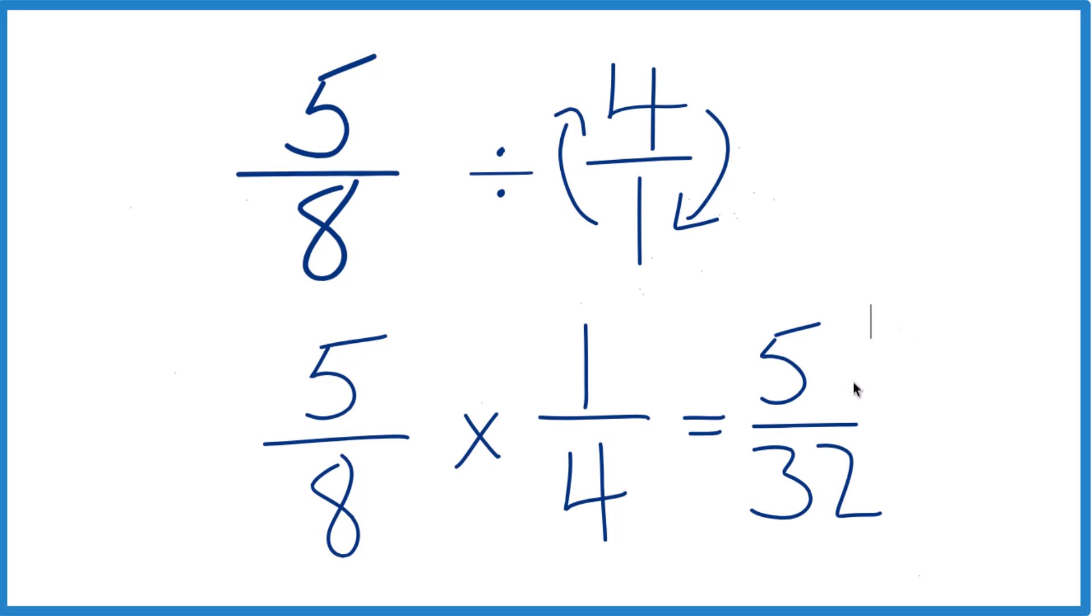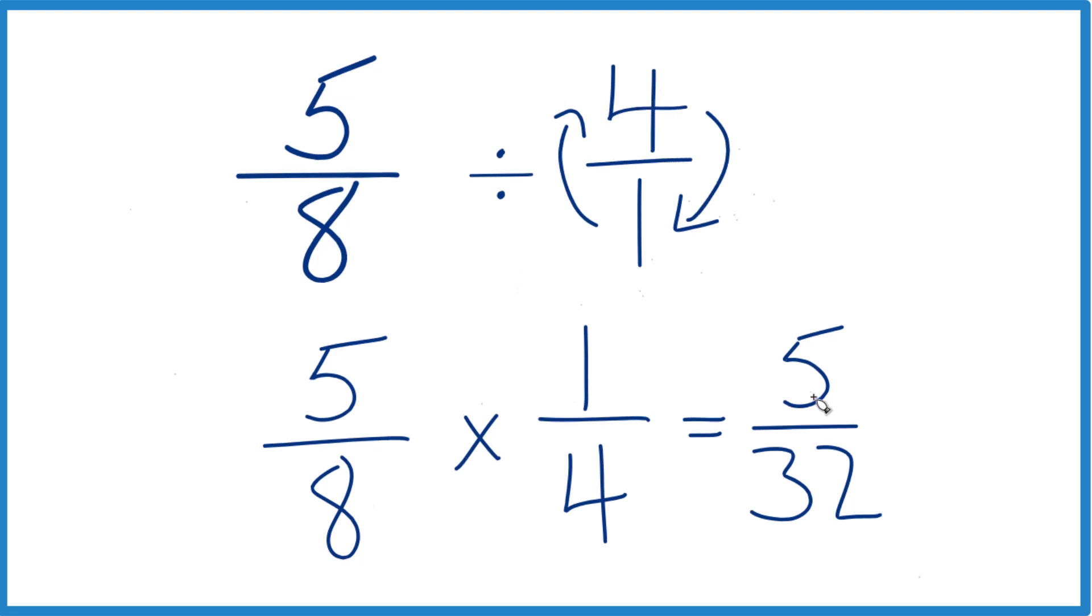So we end up with 5 thirty-seconds. So in answer to our question, 5 eighths divided by 4, or you could say 5 eighths times 1 fourth, that ends up giving us 5 thirty-seconds.